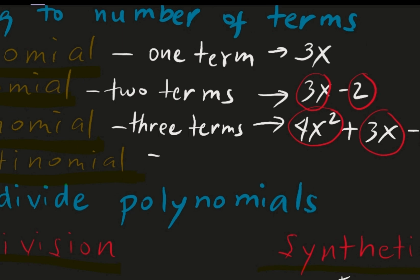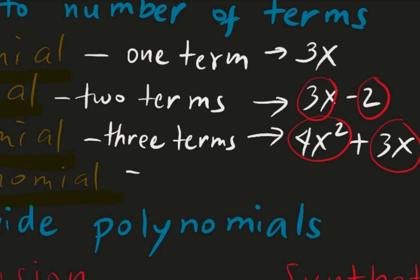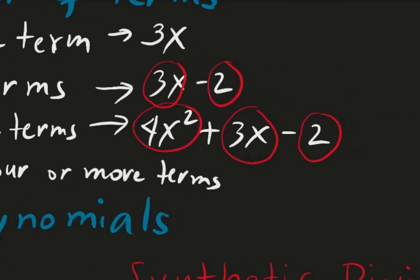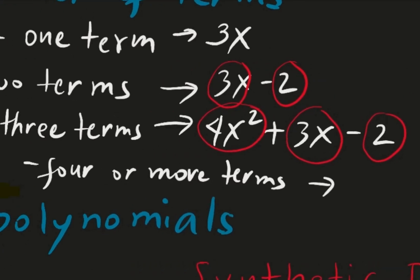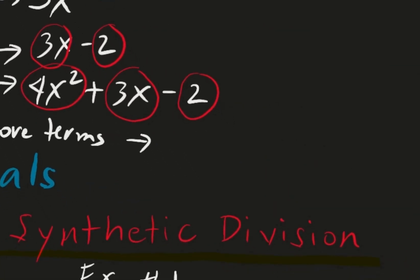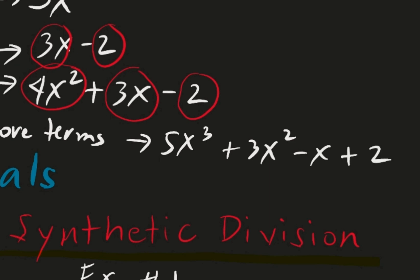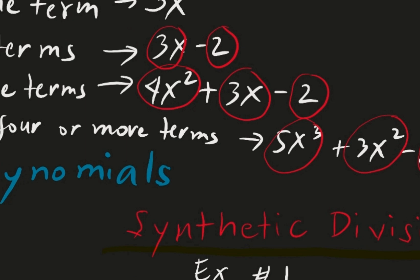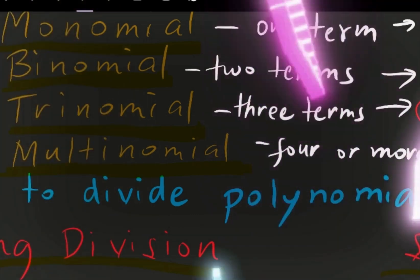If there are 4 or more terms, for example 5x cubed plus 3x squared minus x plus 2, let's count: 1, 2, 3, 4 — more than 3. That is considered a multinomial. Remember, this lesson is basic.